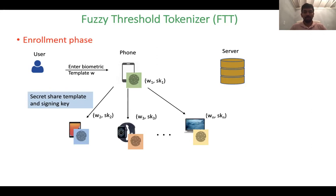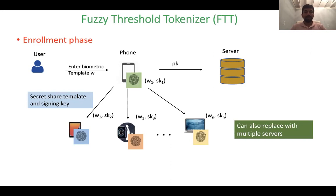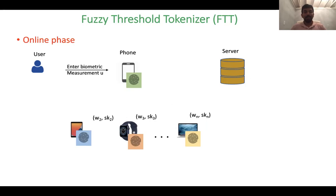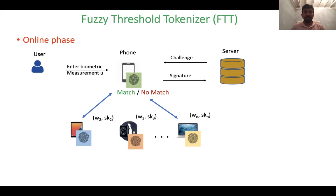Think of a user who has a phone, an iPad, a smartwatch, and a laptop, for example. The public key is sent along to the server as before. You can also think of a setting where the user only has one device, but now instead of a single server, there are multiple servers, each of whom holds one sharing of the key. But for the purpose of this talk, let's just stick to the user having multiple devices. In the online phase, the user can enter their biometric measurement. The phone, instead of performing the biometric matching locally, talks to all these different other devices that the user owns to check whether the biometric measurement matched with the template that was secret shared amongst all these devices. If the match succeeded, the phone tries to generate a signature by talking to all these devices and produces it back to the server to authenticate.